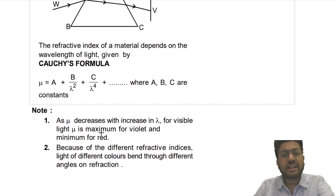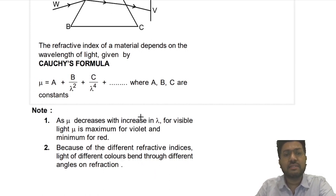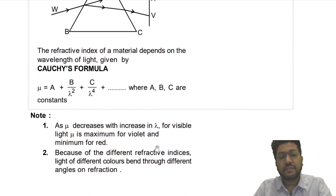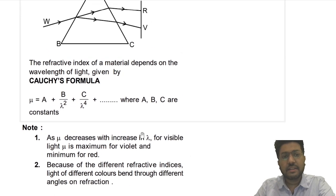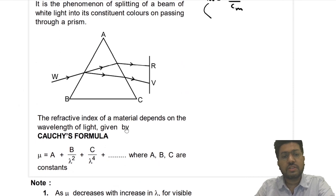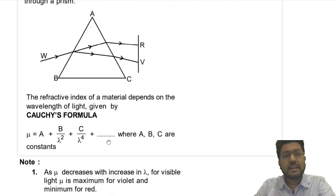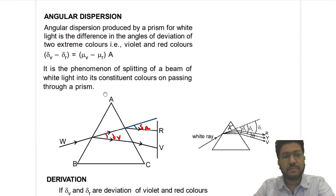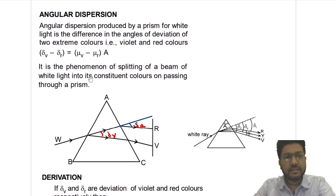Because of different refractive index, light of different colors bends through different angles of refraction. Because of the different refractive index, light of different colors will bend differently. Violet will bend the most and red will bend the least. So this is the phenomenon of dispersion of light.